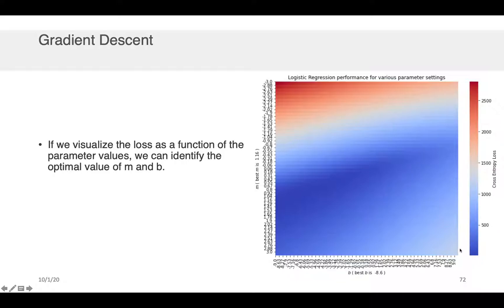Now just remember that this loss here, bluer is better, right? Because you want to have less loss. That corresponds to better parameter values.